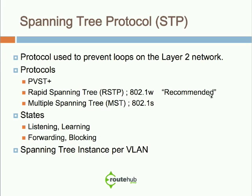Rapid Spanning Tree gives much faster convergence for layer 2 switching. There are mechanisms such as Backbone Fast and Uplink Fast, many of which are included within Rapid Spanning Tree and available on newer hardware. There is also Multiple Spanning Tree, or MST, known as 802.1S.